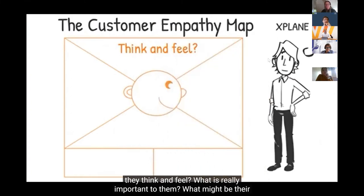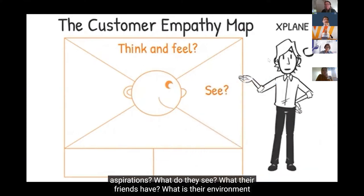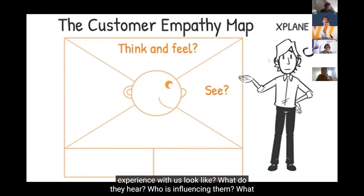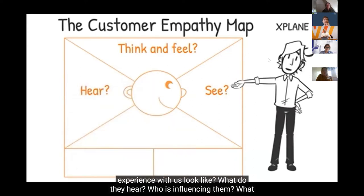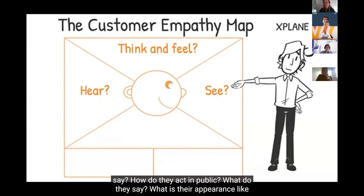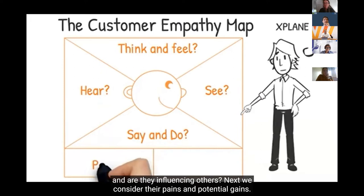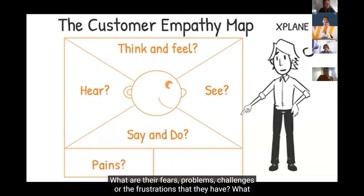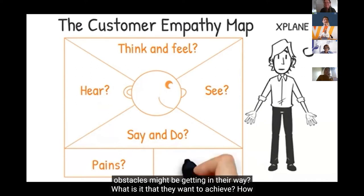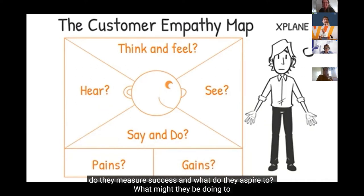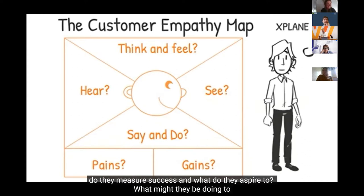The customer empathy map allows us to empathize with our customers by considering the following aspects: How do they think and feel? What is really important to them? What might be their aspirations? What do they see? What do their friends have, what is their environment, and what marketing messages are they exposed to? What do they hear? Who is influencing them, what media are they listening to, and what do their family, friends, colleagues or boss say? What are the expectations they have? What obstacles might be getting in their way? What is it that they want to achieve? How do they measure success? And what might they be doing to achieve their goals?